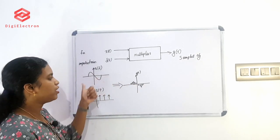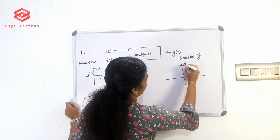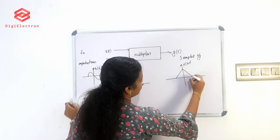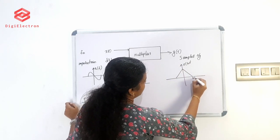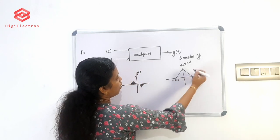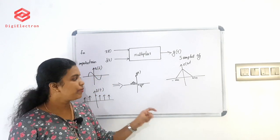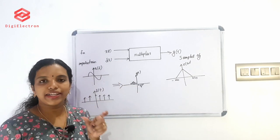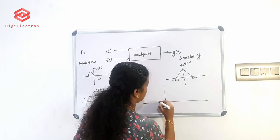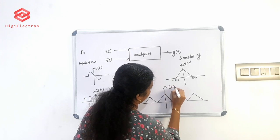How is the continuous time signal represented? x(omega) is the spectrum of the continuous time signal. x(omega) is a band-limited signal — after a certain point, the signal is strictly zero. We also have the spectrum of G(t), which is G(omega).